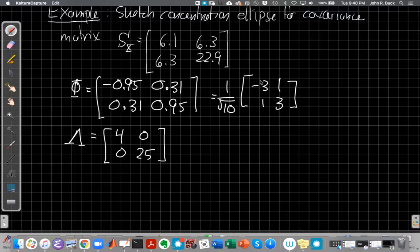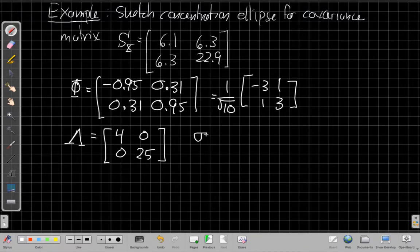When I've found the eigenvalues and eigenvectors, it turns out the eigenvectors are this matrix here, minus 0.95, 0.31, 0.31, 0.95, which is the same as 1 over root 10 times minus 3, 1, 1, 3. And the eigenvalues associated with it is 4 and 25. So this is saying that in this rotated coordinate system where things will be uncorrelated, my powers will be 4 and 25.